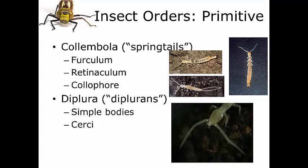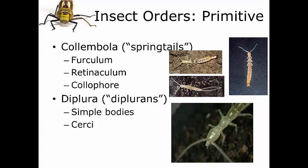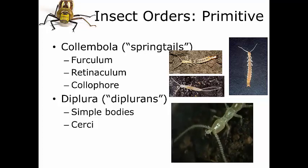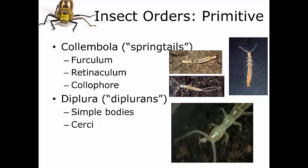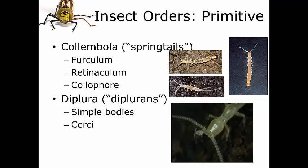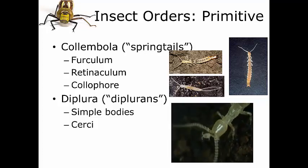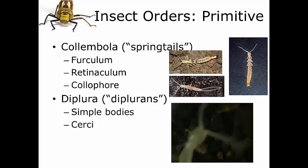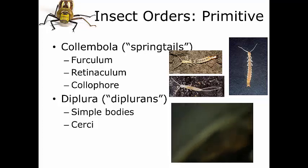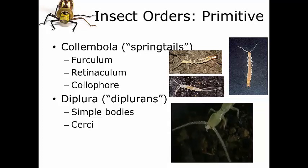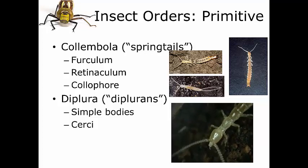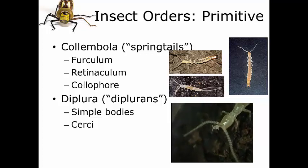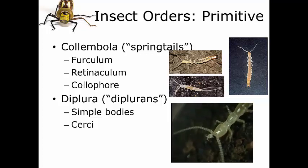The diplurans exhibit ametabolous development — there is no real change from nymph to adult. When they become sexually mature they mate much like collembolans. The males produce spermatophores and glue them directly to the substrate instead of putting them on stalks like Collembola. Each male can produce up to 200 spermatophores per week, but the sperm will only remain viable for about two days. Females wander around their general area, gather up spermatophores, take them into their genital tract, and then lay eggs on the ends of tiny stalks inside crevices in the ground.